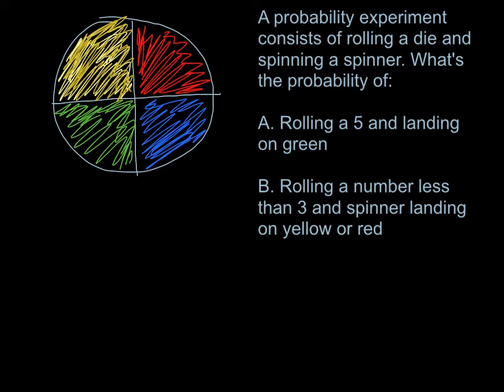I didn't draw the little die for you — hold on, there we go. Now it's definitely quality. So now we have a multiple-event experiment going on. We are spinning this spinner, and rolling a die. You're going to spin the spinner like you're playing a game, and then you're going to roll a die. It might be some bizarre game. So I've got two examples here.